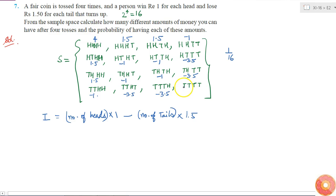And here there are 4 tails, that means 4 into 1.5, that is what I will lose, so minus 6. So I have calculated the different amount of money I can get for all the elements of the sample space.